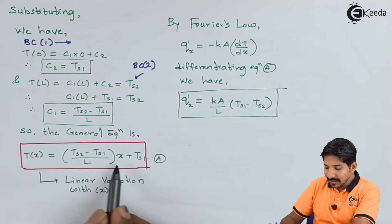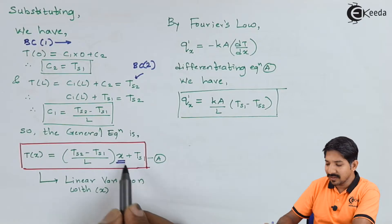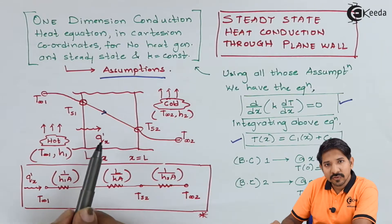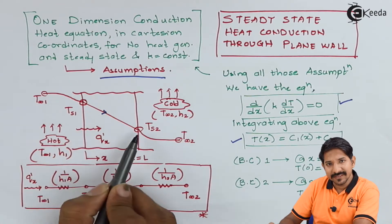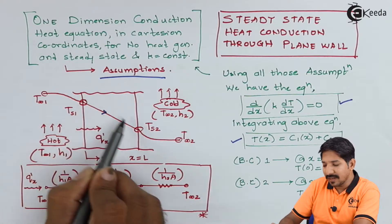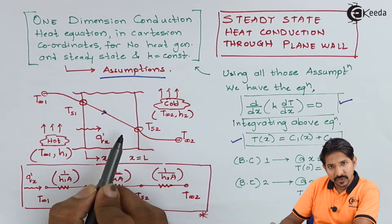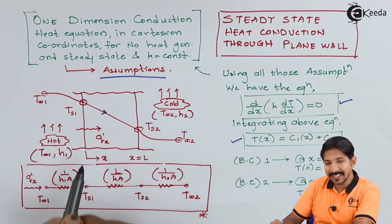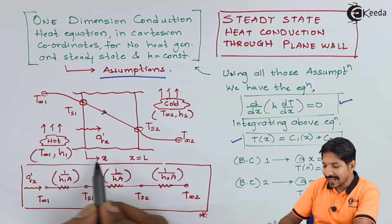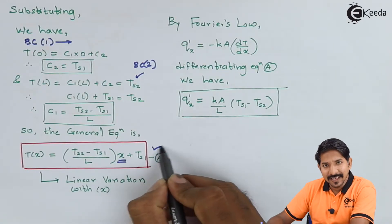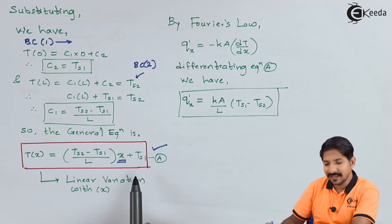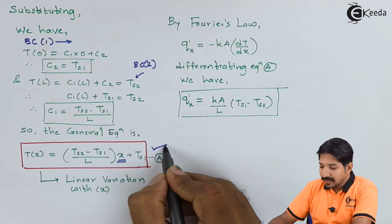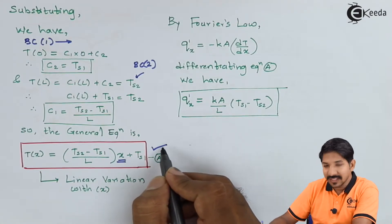We can see that the temperature depends linearly on dimension X because the power of X is 1. That is what I was talking about — I can join these two points linearly, not by some parabolic or cubic curve, because the temperature in this case depends linearly on dimension X. This is where we get the temperature distribution in case of steady state heat transfer.